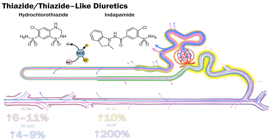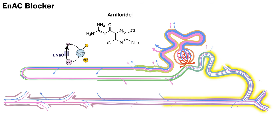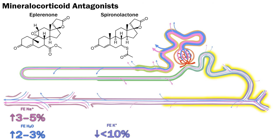Thiazides act more distally and are relatively less potent, lacking the medullary effects of loop diuretics — relatively more sodium is excreted than water. They can cause the greatest potassium loss, up to twice the quantity initially filtered. Amiloride works on an adjacent mechanism, preventing the unbalanced reabsorption of sodium in exchange for potassium excretion. Mineralocorticoid antagonists have a very similar effect to amiloride but work indirectly and somewhat more broadly. Spironolactone has a very long duration of effect — over 24 hours due to an active metabolite — making it potentially very dangerous in renal impairment due to risk of hyperkalemia. Eplerenone is much shorter acting (about 5 hours) and more specific for the mineralocorticoid receptor, eliminating some of spironolactone's androgen-blocking side effects.